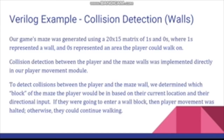Our game's maze was generated using a 20 by 15 matrix of 1s and 0s, where 1s represented a wall and 0s represented an area that the player could walk on. To detect collisions between the player and the maze wall, we determined which block of the maze the player would be in based on their current location and their directional input. If they were going to enter a wall block, then the player movement was halted. Otherwise, they could continue walking.